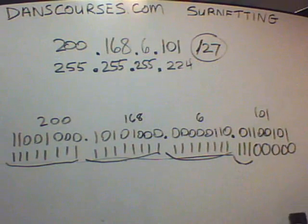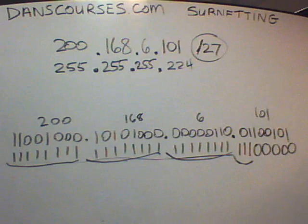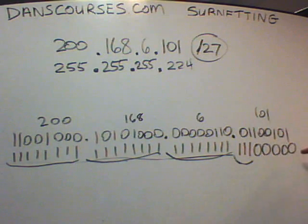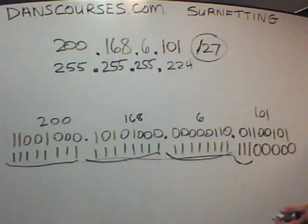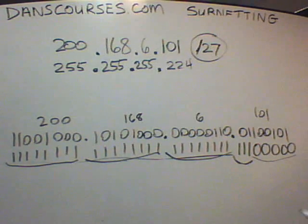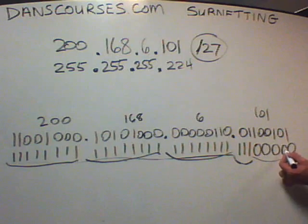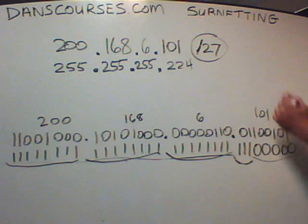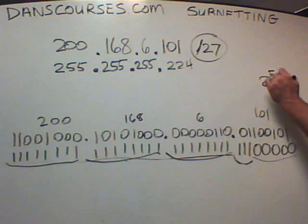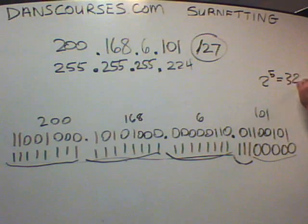Now that we've done that, it changes the network completely. Before we had 8 bits for hosts and 254 possible hosts. Now we have less zeros, so we have fewer hosts possible. We only have 5 bits for hosts — 5 zeros — which is 2 to the 5th power, or 32 possible hosts in this network.